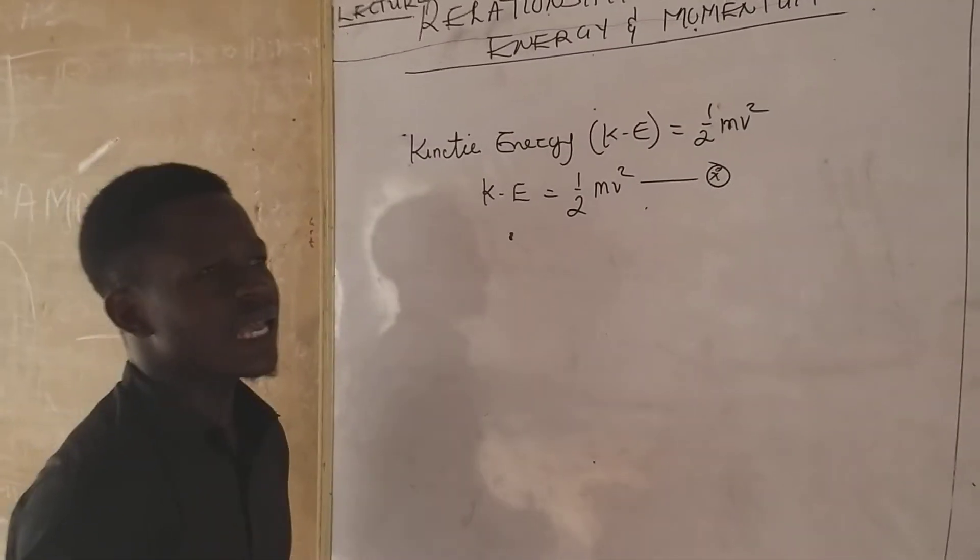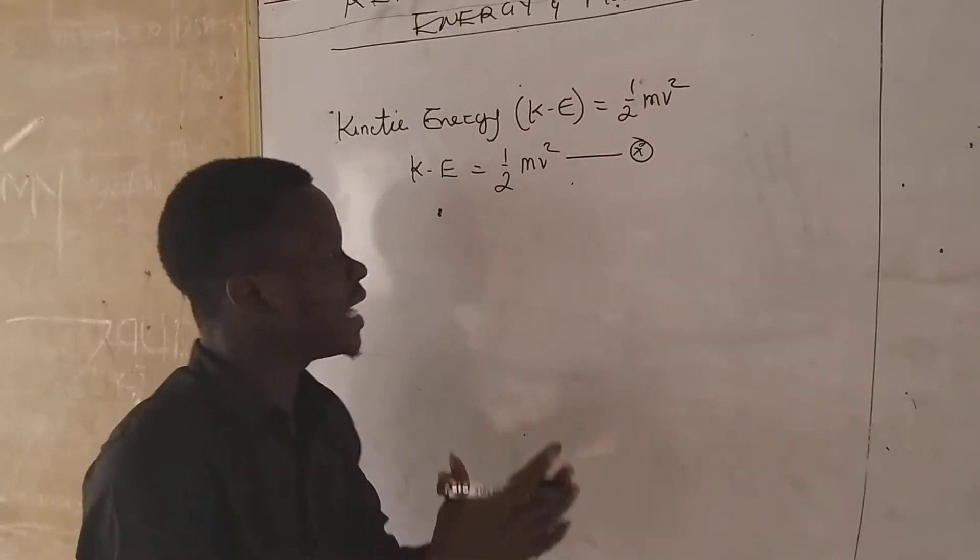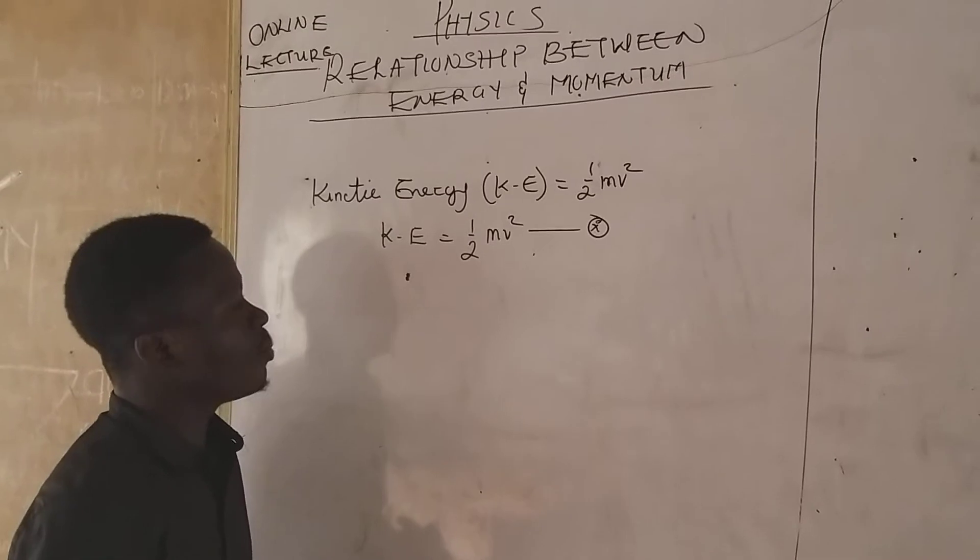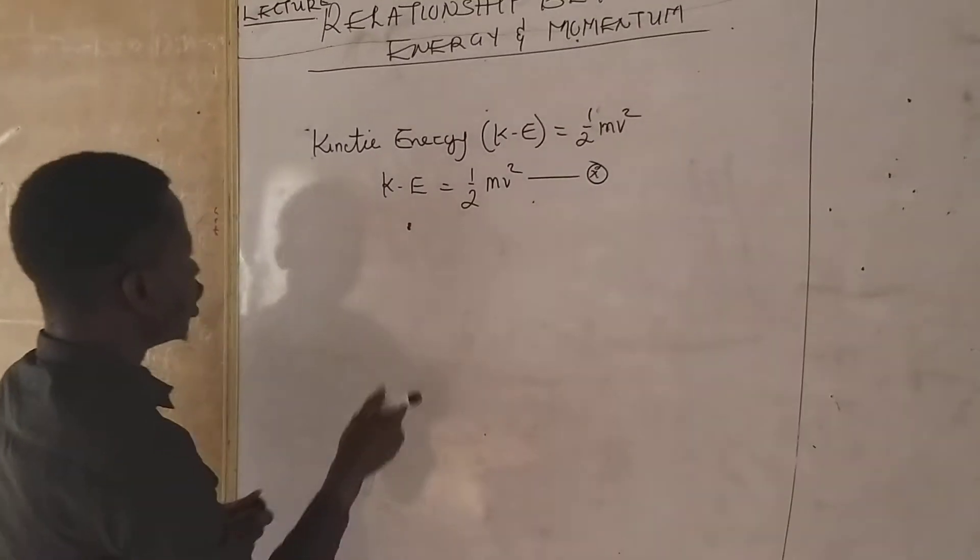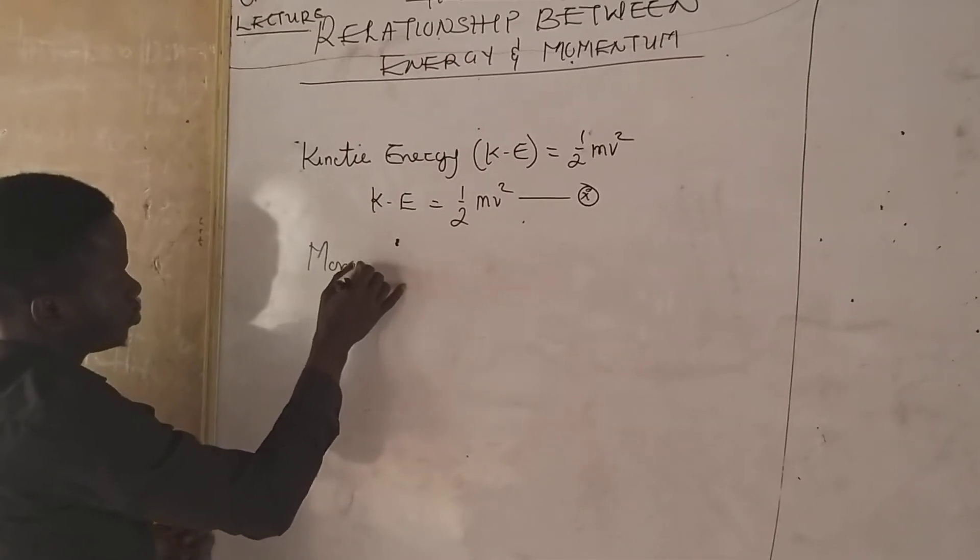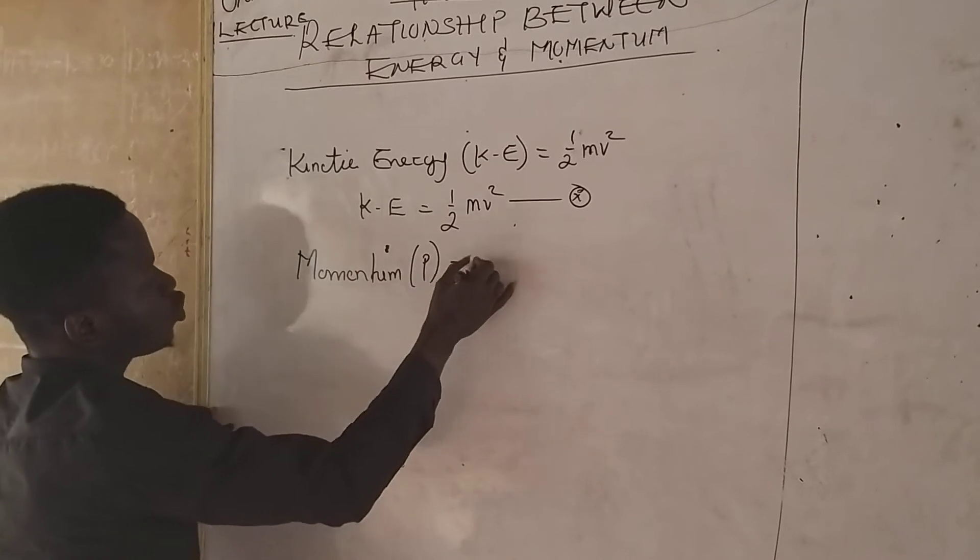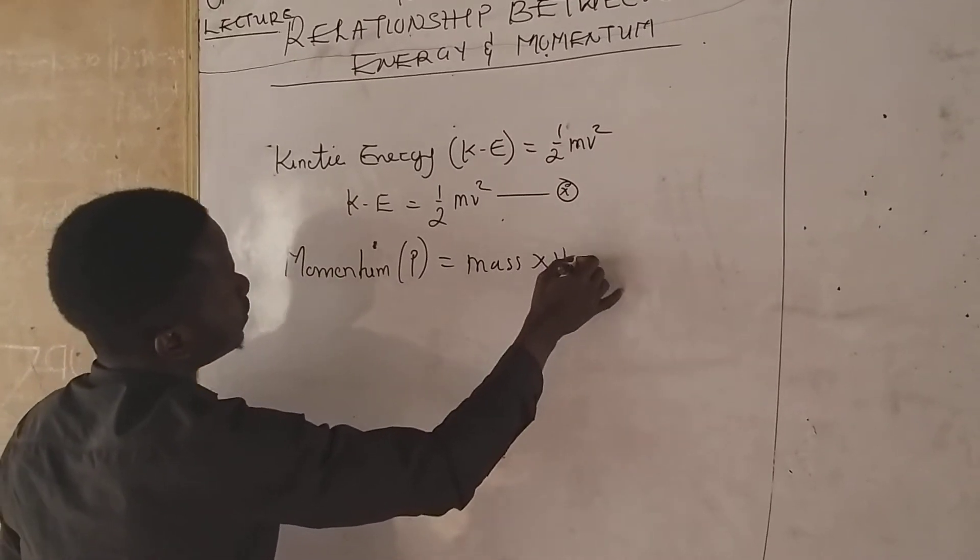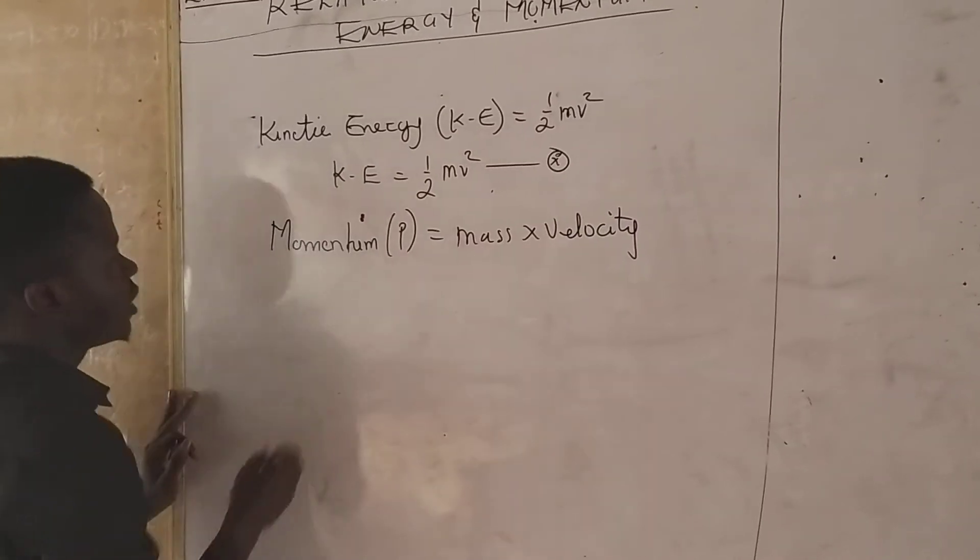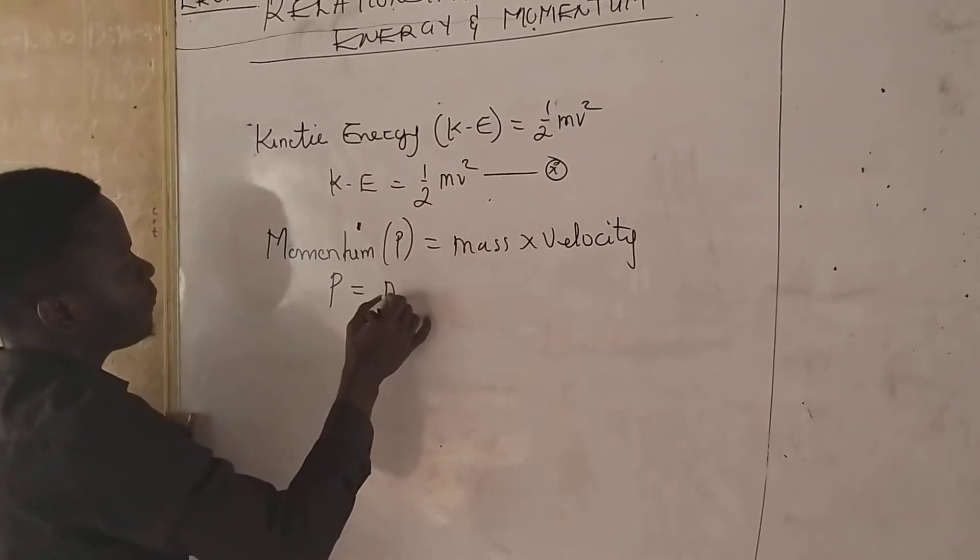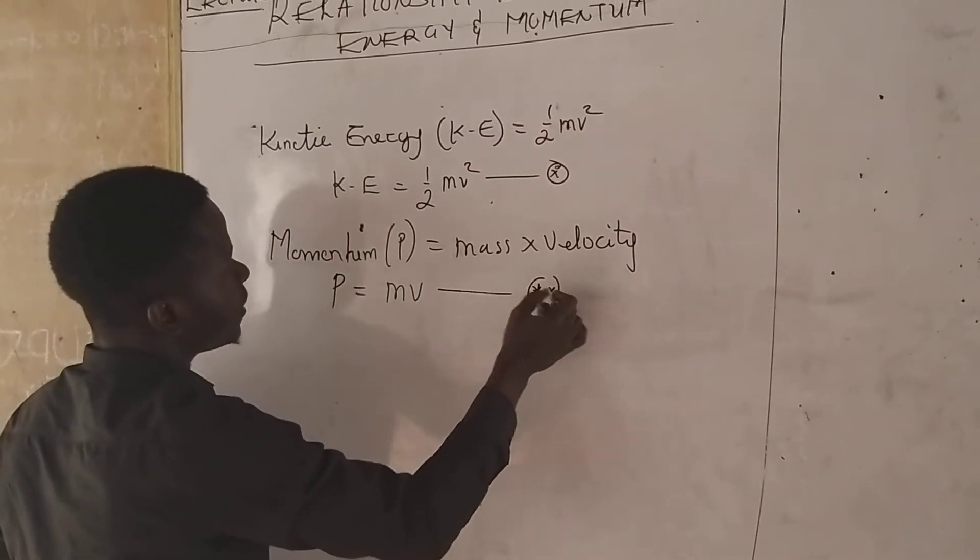Now what is momentum? Momentum is a product of mass times change in velocity. So we can say that momentum, P, is equal to mass times velocity. That is P equals Mv. Equation 2.